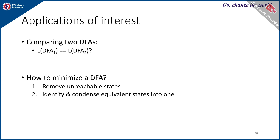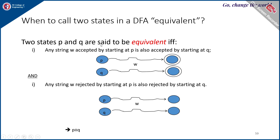Next is to identify and condense the equivalent states into one. Two states P and Q are said to be equivalent if and only if any string W accepted by starting at P is also accepted by starting at Q. That means if the machine with start state P accepts string W, then Q should also accept it, and if W is rejected starting at P, then starting at Q it should also be rejected. In general, two states are equivalent whenever both machines accept and reject the same strings.